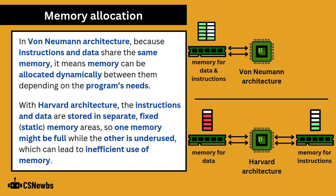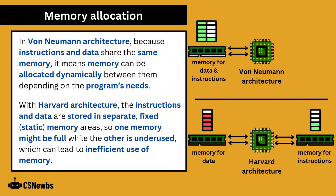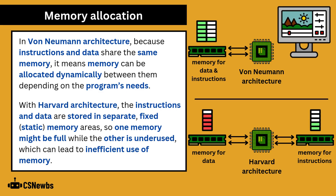In von Neumann architecture, because instructions and data share the same memory, memory can be allocated dynamically between instructions and data depending on the program's needs. With Harvard architecture, the instructions and data are stored in separate, fixed, static memory areas, so one memory might be full while the other is underused, which can lead to inefficient use of memory.